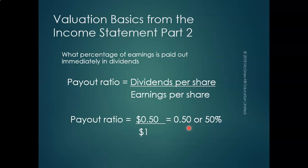What percentage of earnings is paid out as a dividend? This is the dividend payout ratio. It equals dividends per share divided by earnings per share. In our case, dividends per share were $0.50 divided by EPS of $1.00, giving a dividend payout ratio of 50%.